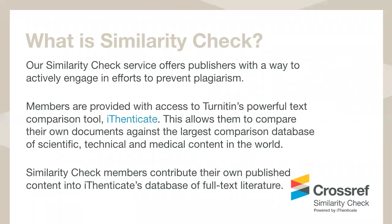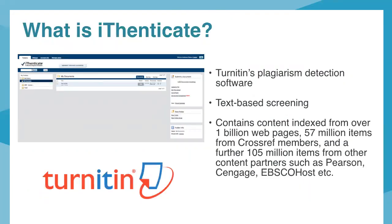Turnitin also provides Similarity Check members access to additional features such as enhanced text matches within the document viewer and access to Turnitin's dedicated Similarity Check support team. iThenticate is Turnitin's plagiarism detection software. You can use it in your browser or via an API. It's used for text-based screening of manuscripts. The Turnitin content database is vast — the content is indexed from over a billion web pages, 57 million content items from the Crossref system, and over 100 million items from other content providers such as publishers like Pearson, Cengage, or EBSCOhost.